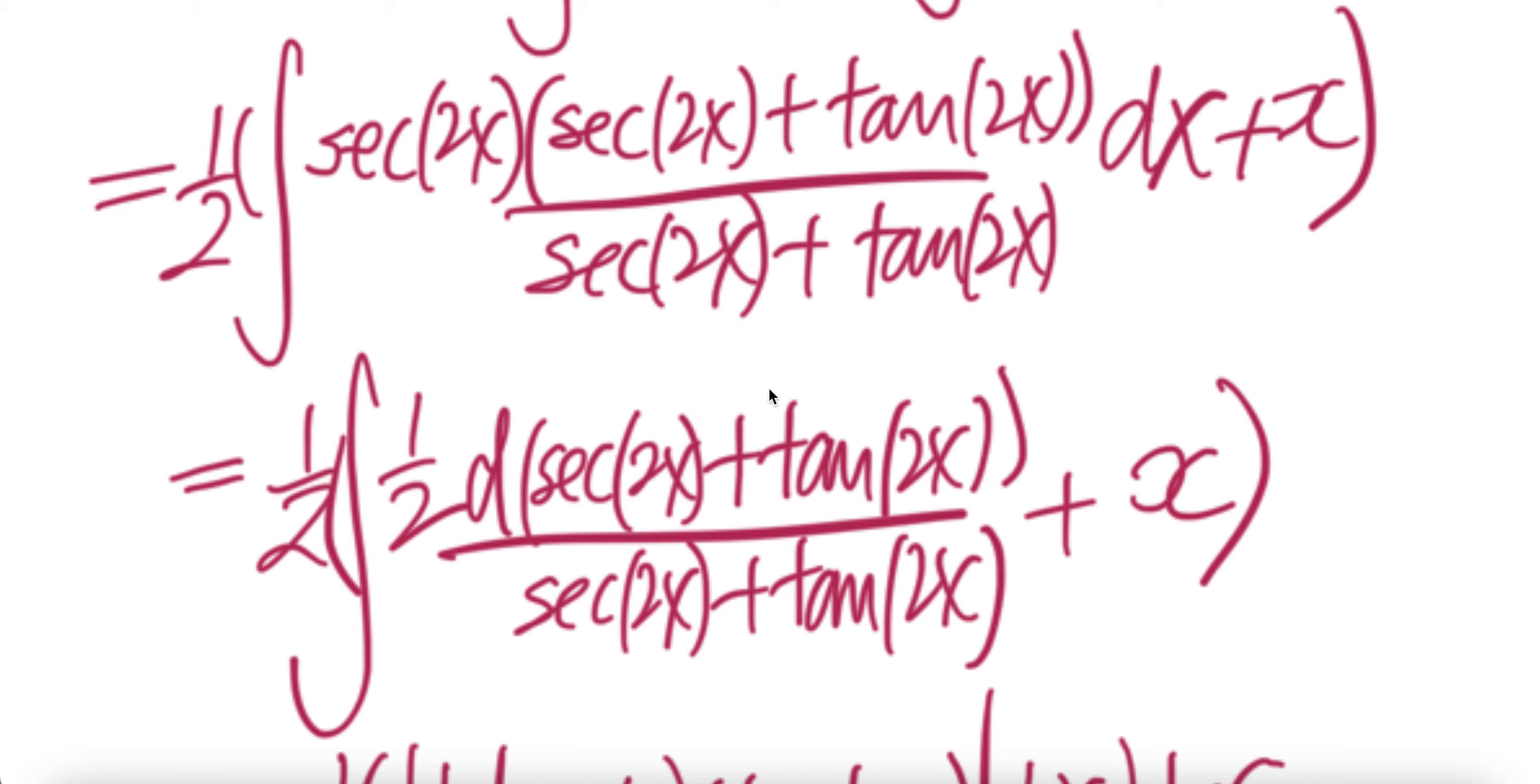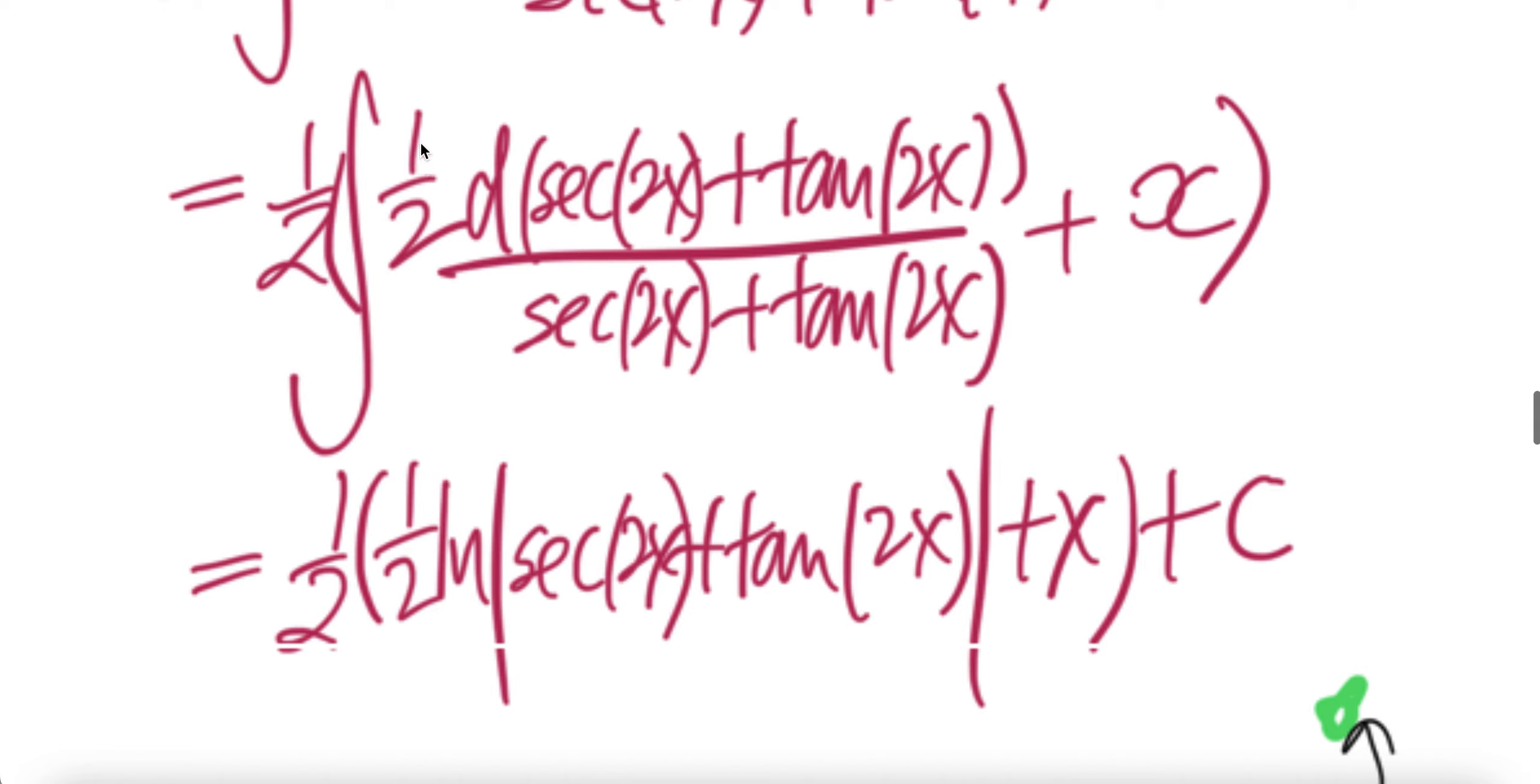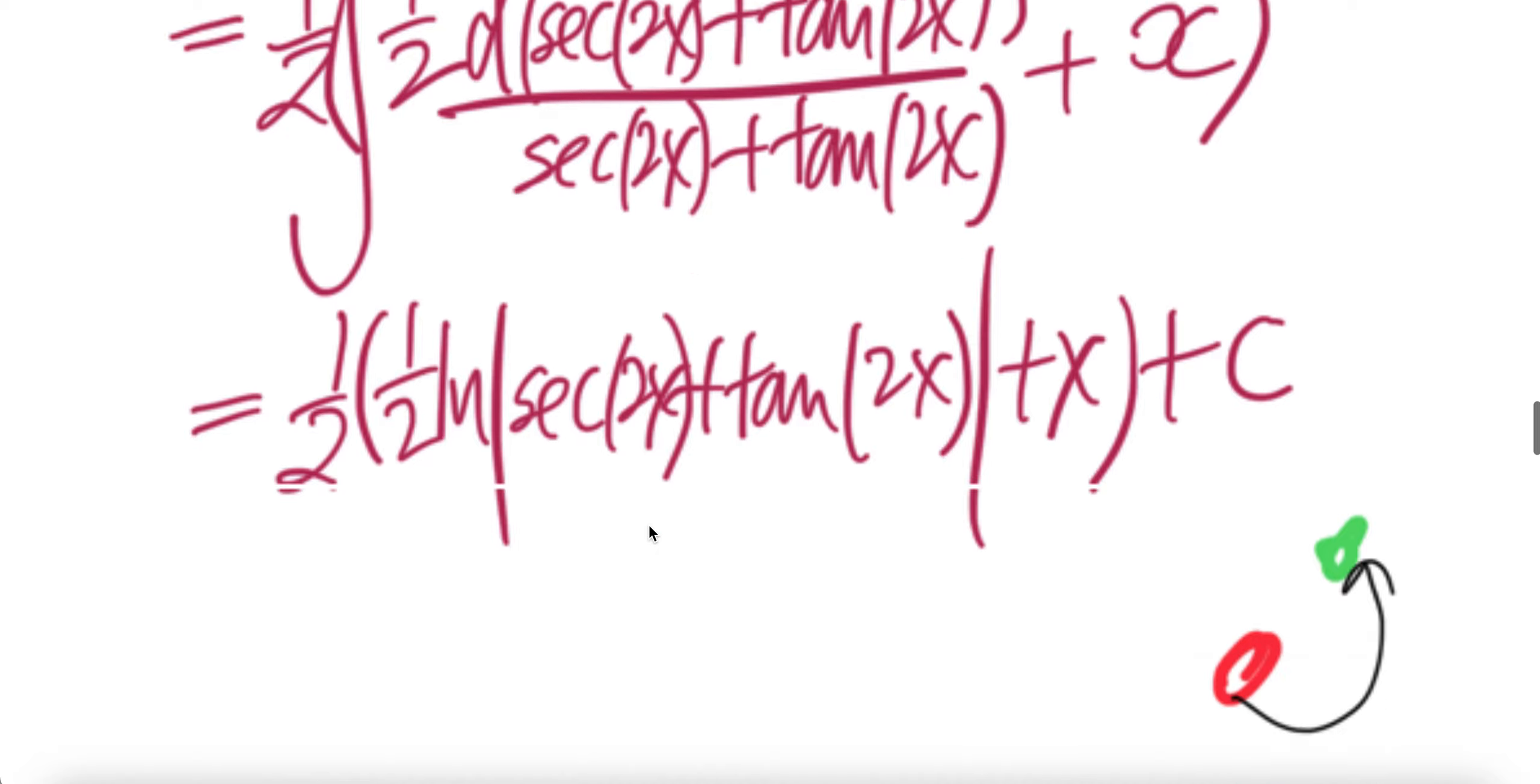So you need, there's a half here, there's a half here. Pull out the common half, you put it here. So this whole thing is the same thing as that. Half out of the integral, and then you have integral of d sec 2x plus tan 2x over that. That is ln absolute value of sec 2x plus tan 2x. Don't forget the plus x here. Plus C. And then there's half here. Done.